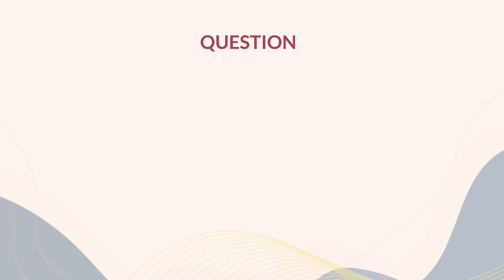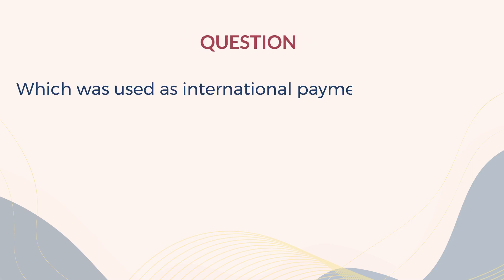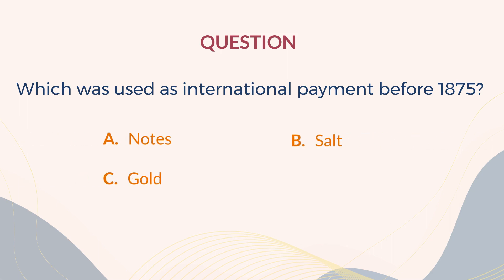Answer the question: Which was used as international payment before 1875? A. Notes. B. Salt. C. Gold. D. Diamond. The correct answer is C. Gold.